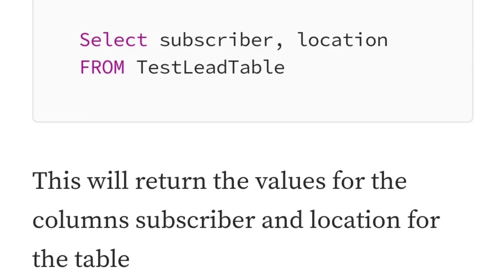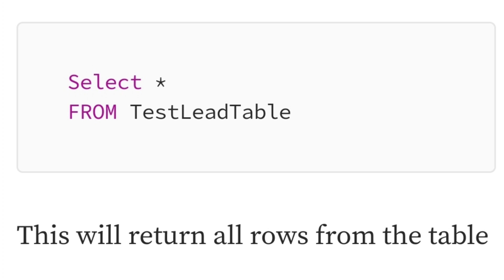So here are some examples. Select subscriber and location from test lead table. This will return the values for columns subscriber and location for the table. Next, select star from test lead table. This will return all rows from the table.